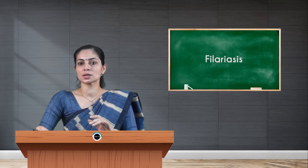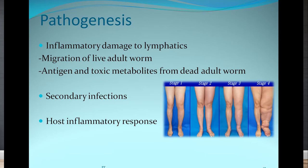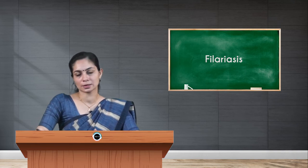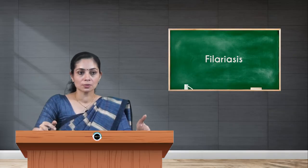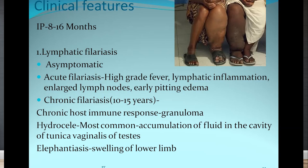Pathogenesis of Wuchereria bancrofti occurs for three reasons. First, inflammatory damage to the lymphatics — due to live adult worms, or due to dead adult worms and the antigens and toxic metabolites from dead adult worms. Second, secondary bacterial infection happening in the patient. Third, the host inflammatory response. Lymphatic filariasis symptoms appear around 8 to 16 months after the mosquito bite. In acute filariasis, the patient presents with high-grade fever, lymphatic inflammation, enlarged lymph nodes, and early pitting edema. After 10 to 15 years it converts to chronic filariasis, mainly due to the host immune response or granuloma. The most common manifestation is hydrocele — accumulation of fluid in the cavity — and elephantiasis, which is swelling of the lower limbs.